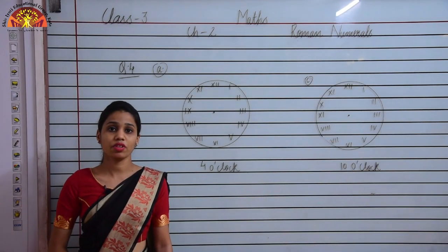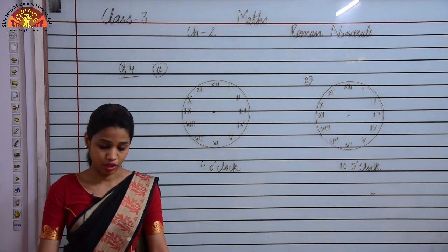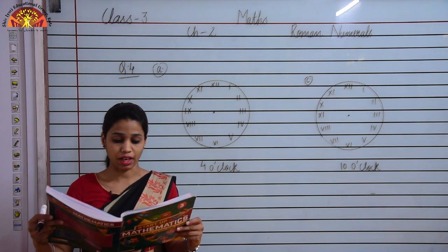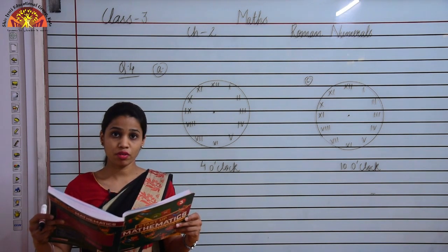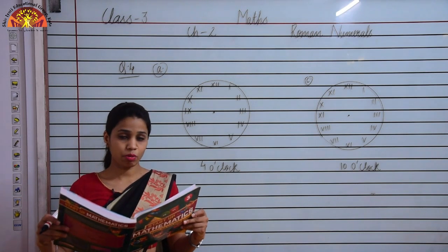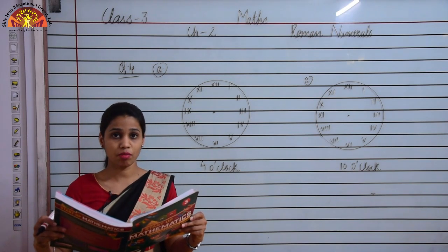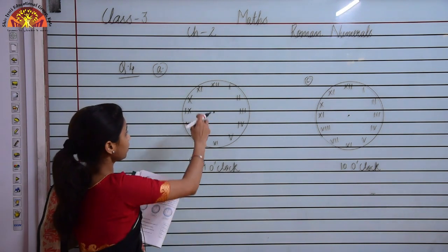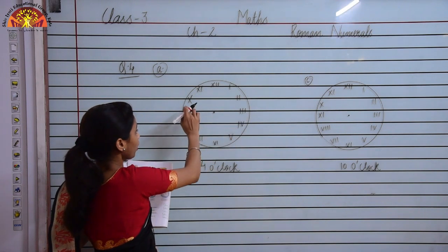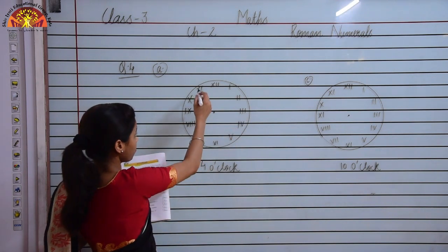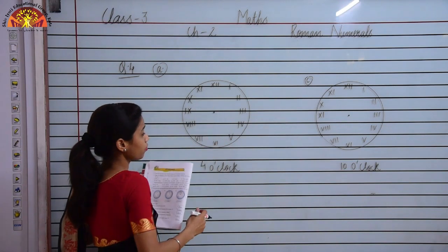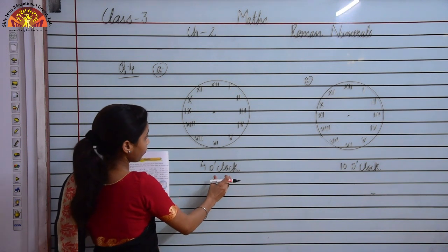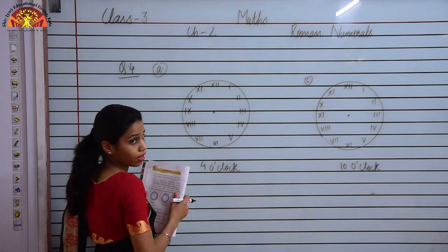Students, now let us see question number 4 given on page number 24 of your book. Question number 4 is: draw the hour hand and the minute hand to show the time written in the box. You are given the time and you have to draw the hour hand and minute hand on the clock. I have written the numbers inside the clock in Roman form — these represent the Roman numerals of the Hindu-Arabic numbers inside the clock. Now this is 4 o'clock, so I have to draw the hour hand and minute hand.